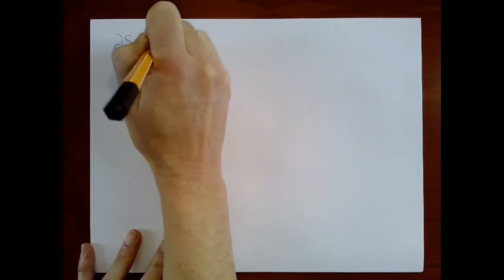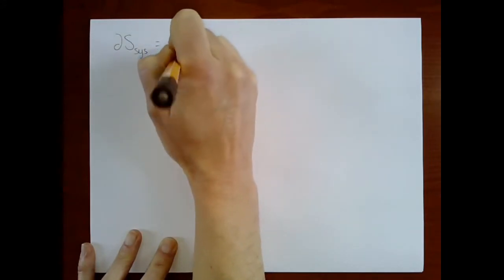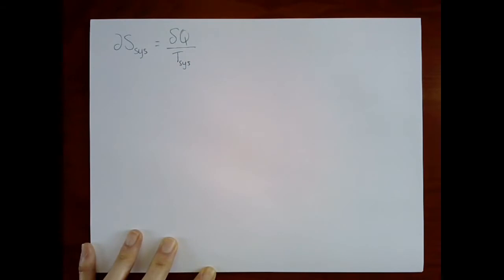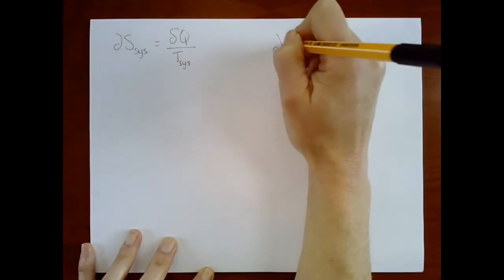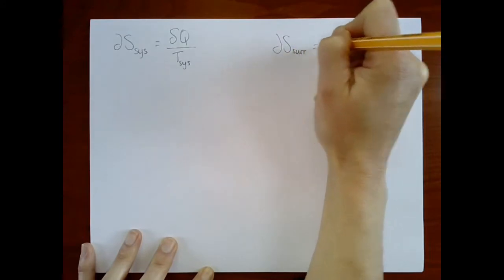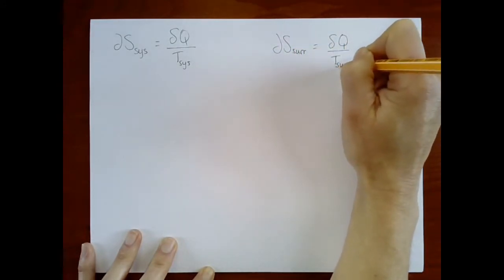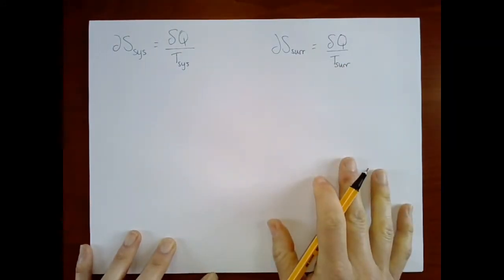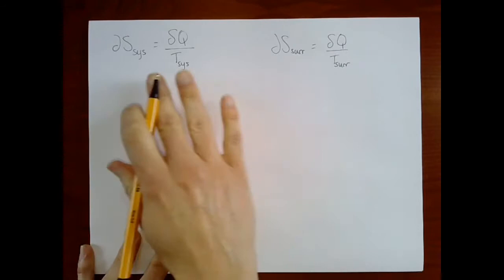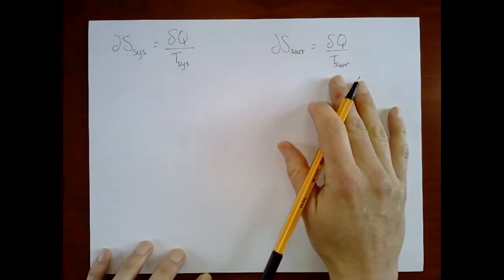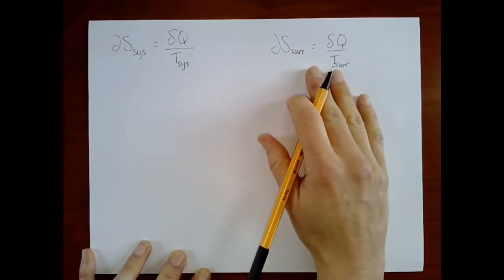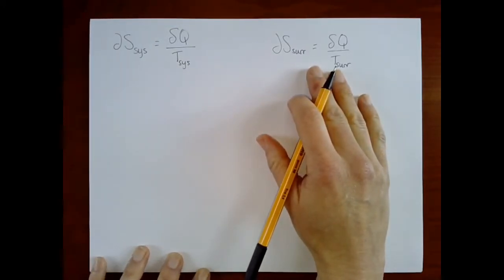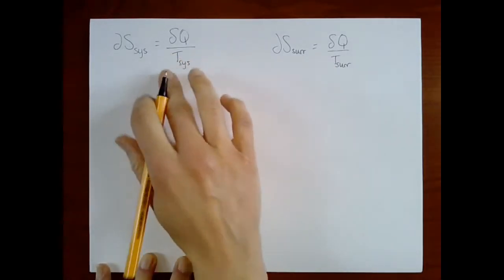All right, so we have our thermodynamic definition of entropy, and now I'm going to be careful to specify system and surroundings. So the change in entropy of the system is equal to the heat flow in and out of the system divided by the temperature of the system. We have the same equation. The same equation applies to the surroundings.